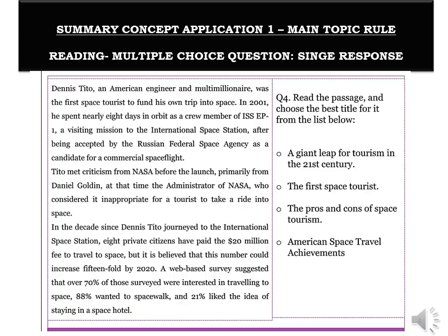The first paragraph's main topic is Dennis Tito — that is the person being discussed. The second paragraph: Tito met criticism from NASA — the repetition tells me Dennis Tito is important, with NASA as a sub-topic. There is a distinguishing feature between a main topic and a sub-topic: a main topic repeats everywhere, occurring in the maximum number of paragraphs. The third paragraph mentions that in the decade since Dennis Tito journeyed, eight private citizens have paid to travel to space. Put all three together — Dennis Tito emerges as the main topic.